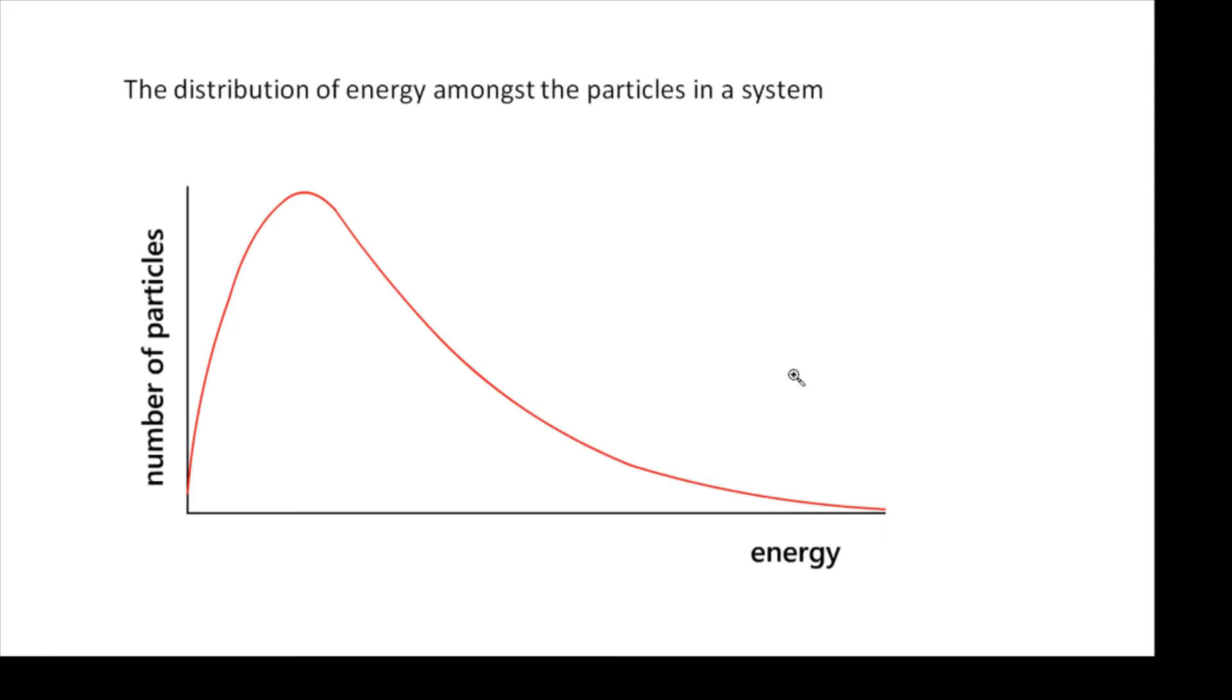This is a graph showing the distribution of energy amongst the particles in a system. It might be the particles in a gas, and looking at it you'll see that some particles don't have very much energy. There's a big bulge around the middle of the graph and then it goes down looking very exponential. Some particles have lots and lots of energy.